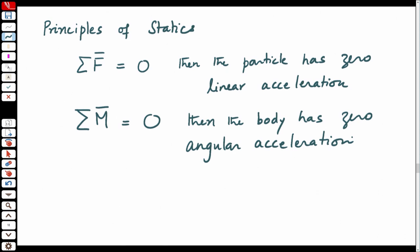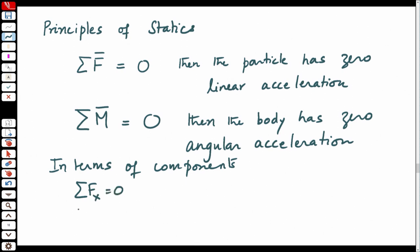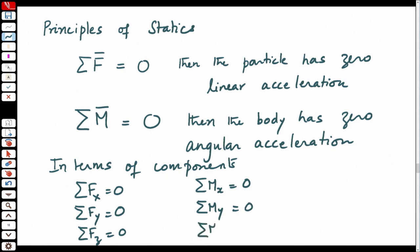You can talk about angular acceleration and angular velocity only for a rigid body. In terms of components, we typically use a Cartesian coordinate system. You would have sigma Fx equal to 0, sigma Fy equal to 0, Fz equal to 0, and similarly for the moments: Mx equal to 0, My equal to 0, Mz equal to 0. This is for a standard Cartesian coordinate system.